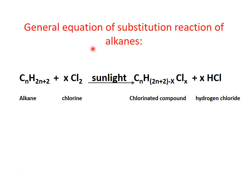So finally, to write a balanced chemical equation for the substitution reaction of an alkane, you start by writing the general molecular formula of an alkane, CnH2n+2, plus X Cl2, where X could be 1, 2, or 3. Under the effect of sunlight or UV light, it produces two products: a haloalkane or chlorinated compound, and the second product, hydrogen chloride, as represented in this equation.